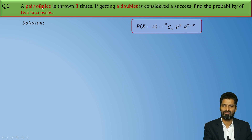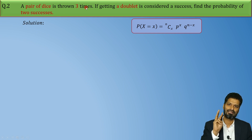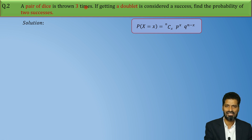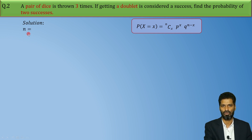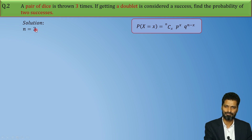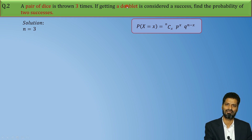So let's find the values one by one. In the question, the pair of dice — how many times has it been thrown? Three times. That means the number of trials is 3. That is n, and the number of trials in this case is 3. Now here, what is success? Getting a doublet.